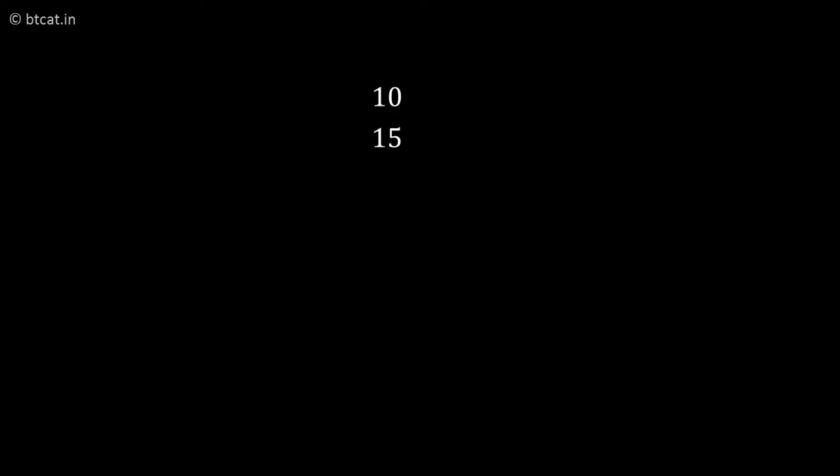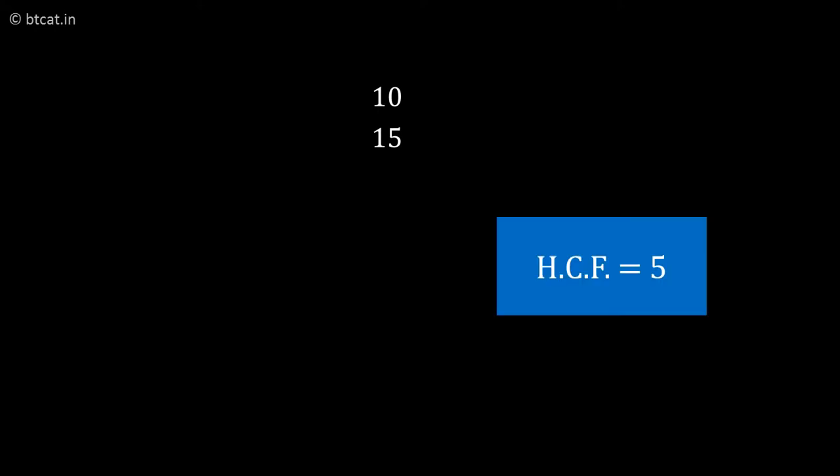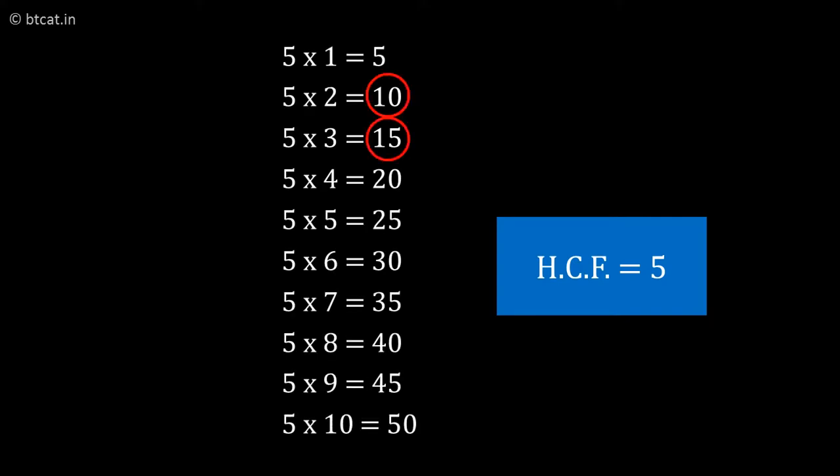So if I have two numbers, let's say 10 and 15, I want to find their HCF. The answer will be 5. The number which will divide both of them, or rather you can say which comes in the multiplication table of both of them. So 5 is the number—5 into 2 is 10 and 5 into 3 is 15. 5 is the largest such number, so we call it HCF.